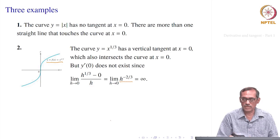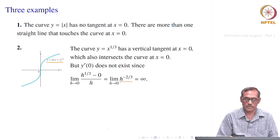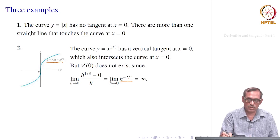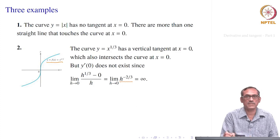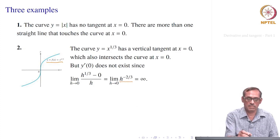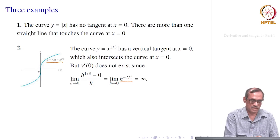Once the slope is infinity, it says there is a vertical tangent, but the function is not differentiable because the limit is infinity, not a real number. Intuitively the limit being infinity signals a vertical tangent exists, but the function is not differentiable at x = 0.